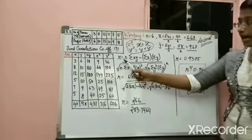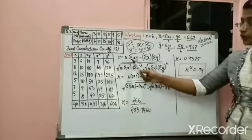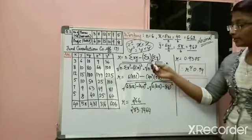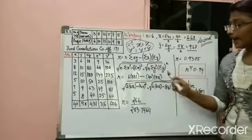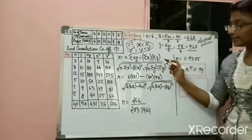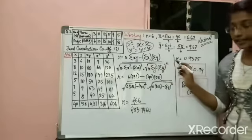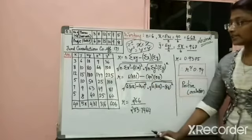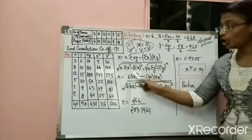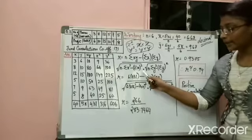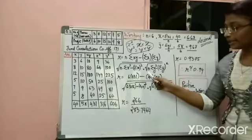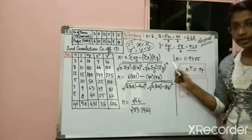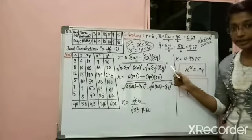The formula is: r = [n·Σxy − Σx·Σy] / [√(n·Σx² − (Σx)²) × √(n·Σy² − (Σy)²)]. You have to remember this formula.